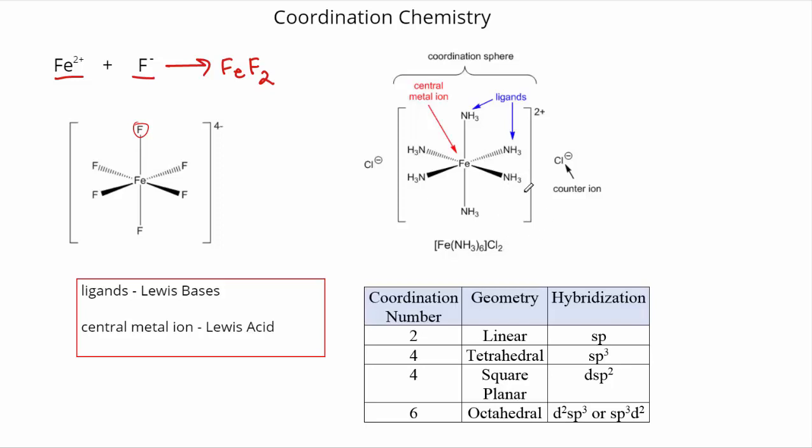In this case, we've got to define what's called the coordination sphere. Your coordination sphere includes the central metal ion and all the ligands that are bonded to it. They are not free to participate in normal aqueous reactions in an aqueous solution. However, the counter ions here, like chloride, are free to participate in normal aqueous reactions. So we'll see that in the next question.